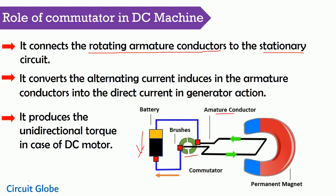Secondly, it is used for converting the alternating current into the direct current. Consider this is the image of DC generator. DC generator converts the mechanical work into the direct current. If any coil is rotating under the magnetic field, that coil induces the alternating current. For converting this alternating current into the unidirectional current, we use the commutator. The commutator converts the alternating current into the direct current, and we are obtaining the direct current from the output of the generator.